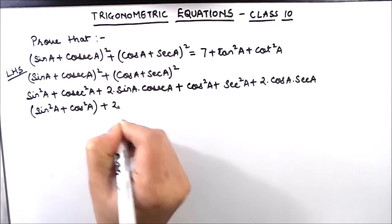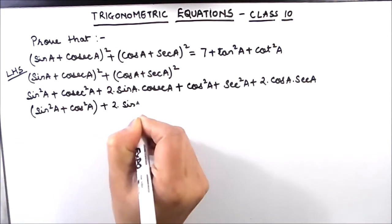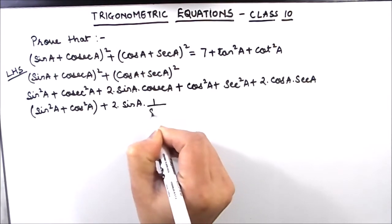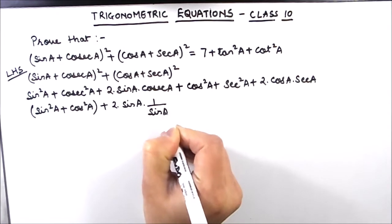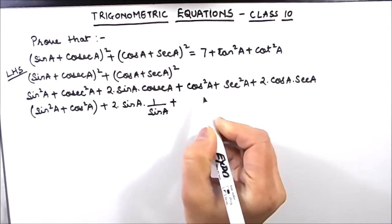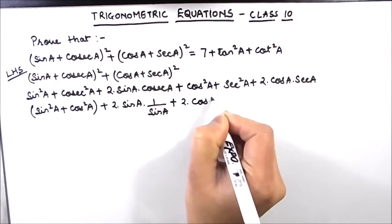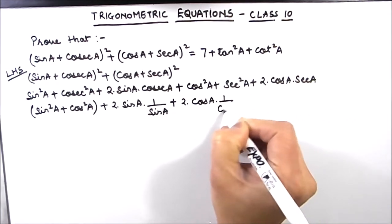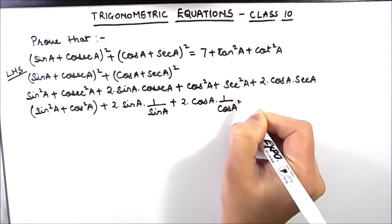Plus 2 times sin A, and this cosec A we can write it as 1/sin A, plus 2 times cos A, times this sec A we can write it as 1/cos A, plus.